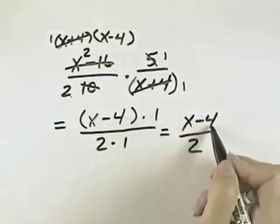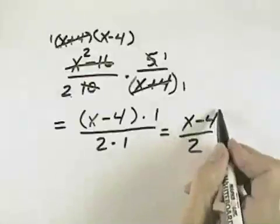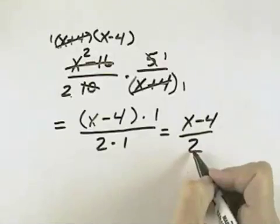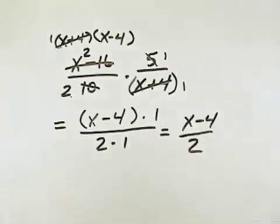We cannot cancel the 2s because the numerator is one factor in itself. The 4 is a separate term, so we can't cancel from terms, only factors. So this is the simplified form.